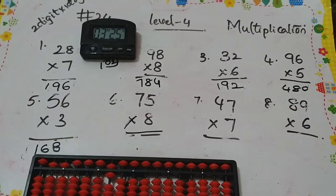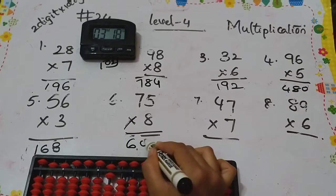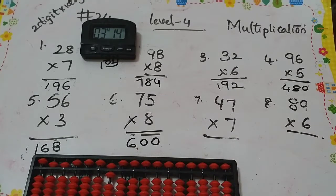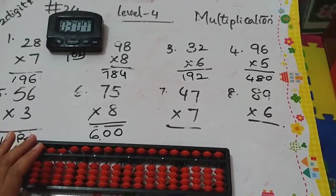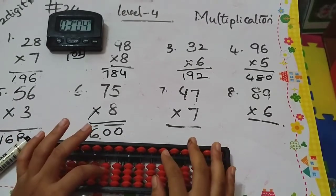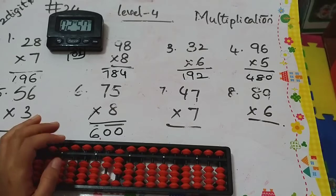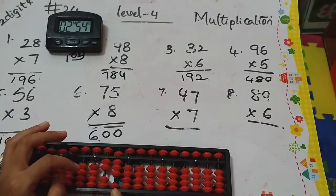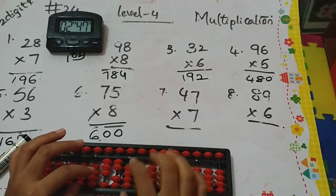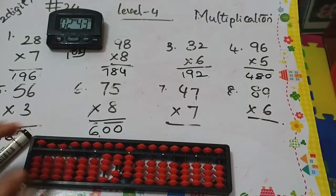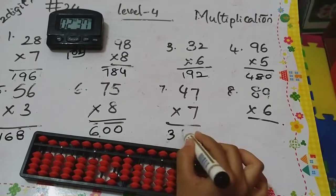Next we're doing 47 times 7. 7 fours are 28, so 2, 8—that's 28. Next, 7 sevens are 49. So here you must add 4. How to add 4? Plus 10 minus 6. Next, here you have to add 9: 49. So what's the answer? 329.